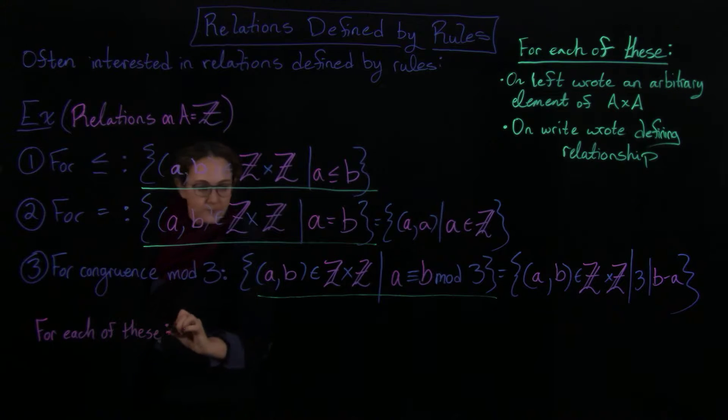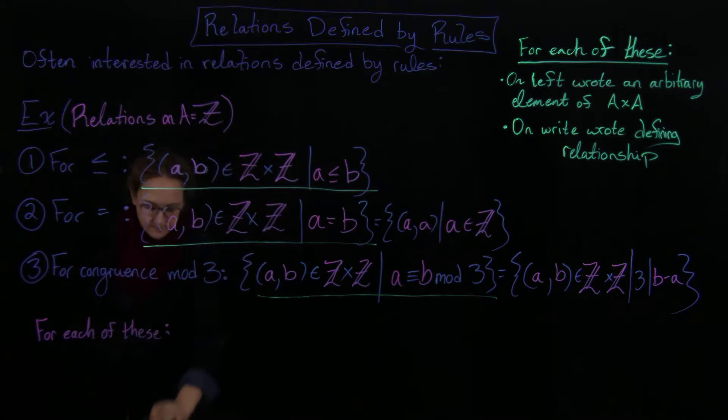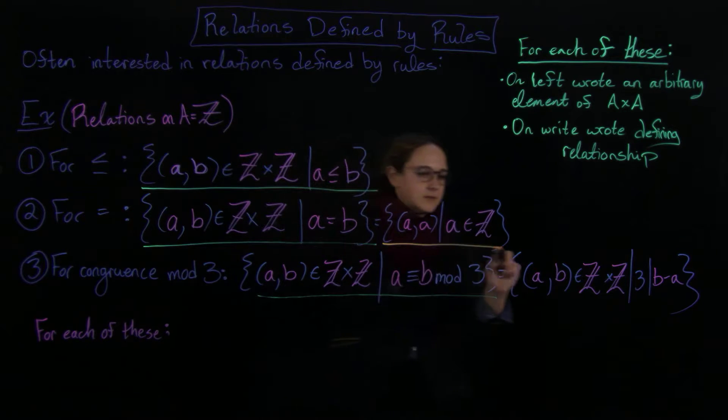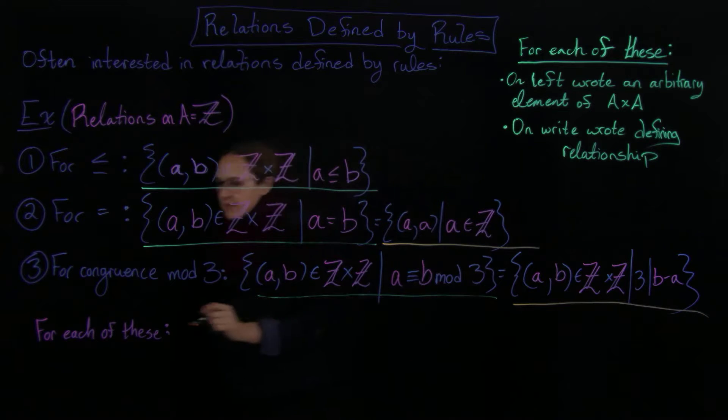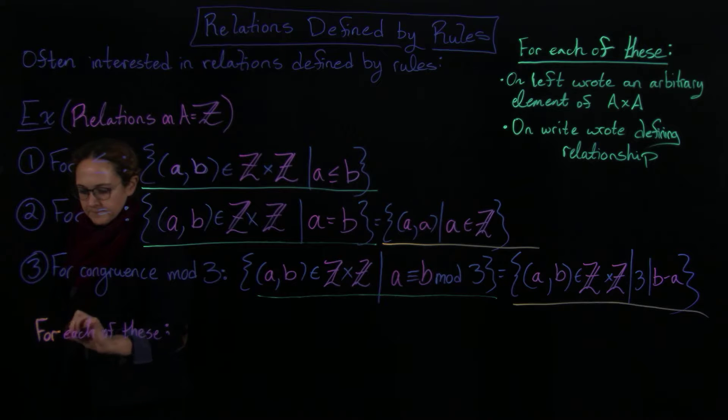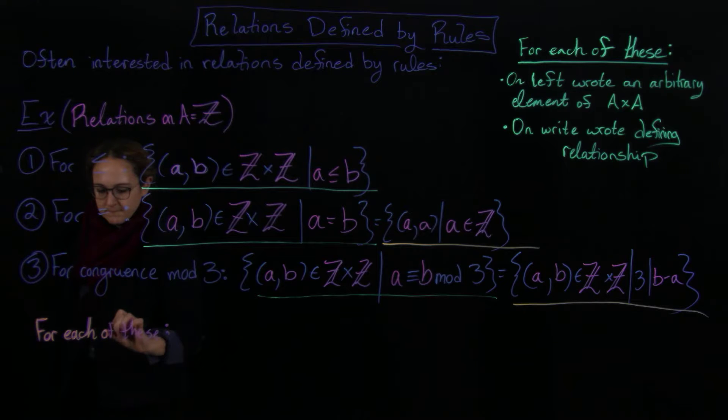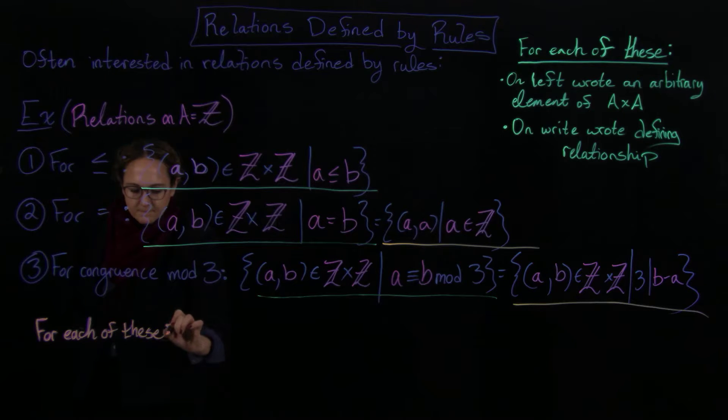It's just kind of a way to write relations. I want to underline these and then do it in orange. I got carried away. Okay, so for each of those ones, how did I redo it?